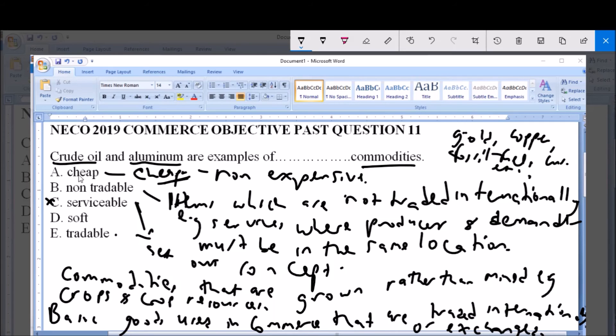From this description, we see that crude oil and aluminium can best be described as tradable commodities because they are traded internationally and are also interchangeable with other goods. So the correct answer is option E, tradable commodities.